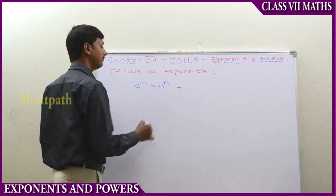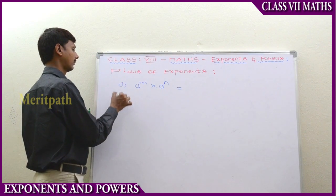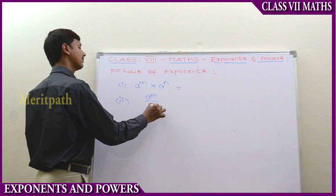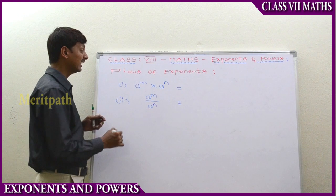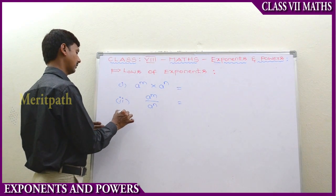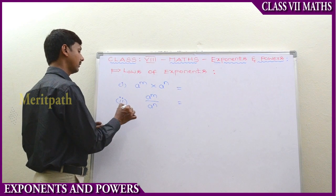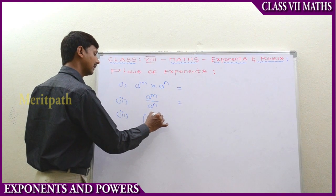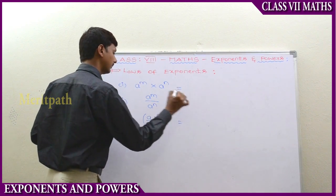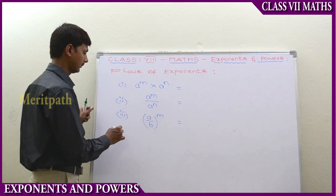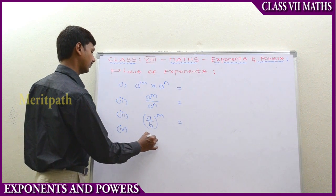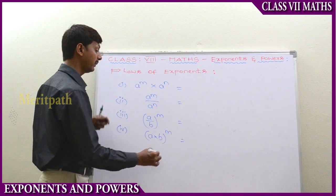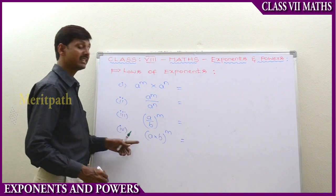So a to the power of m into a to the power of n, and a to the power of m divided by a to the power of n. When they have multiplication with the same base, we add the exponents. When they have different bases with the same power, there is a divisive multiplication rule.